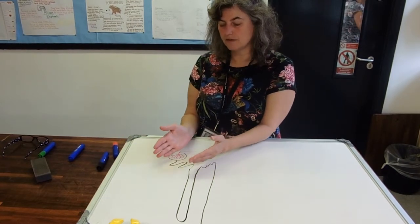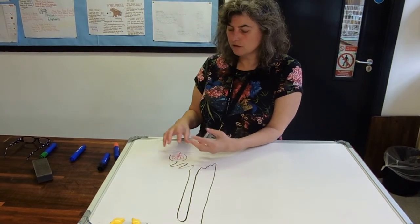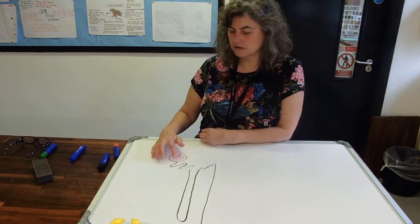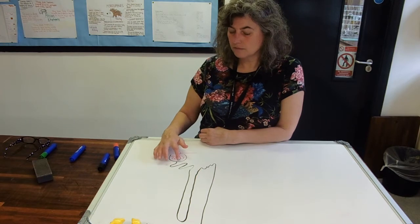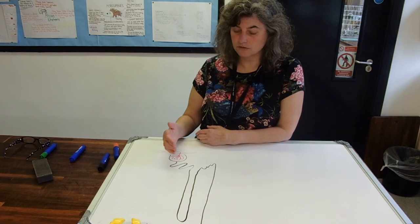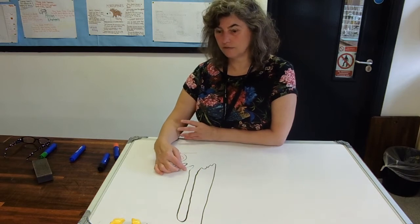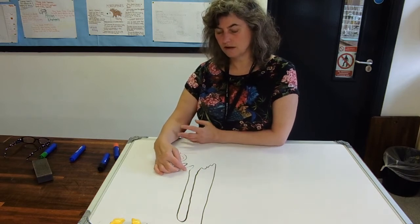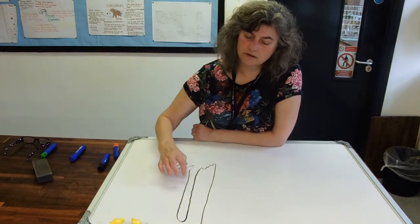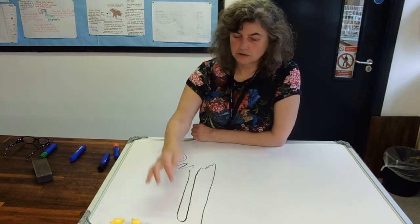We talked a bit about the proximal convoluted tubule and renal threshold. Remember that if your glucose level in your bloodstream is too high because you have untreated diabetes, then that sugar—there'll be too much glucose going past the carriers for it all to be reabsorbed. Once it gets to the end of the proximal convoluted tubule, you can't reabsorb any more of that glucose and it stays inside the filtrate as it goes around the loop of Henle.